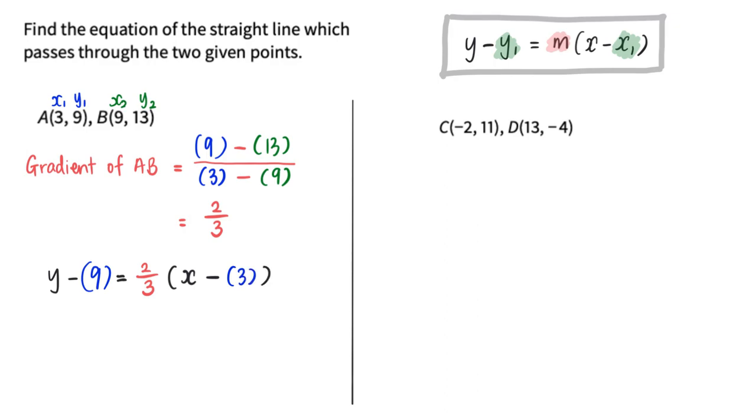The next step is simply to simplify this equation. I would have y minus 9 equals 2/3 multiplied by x, which is 2/3x, and 2/3 multiplied by negative 3, which is negative 2.